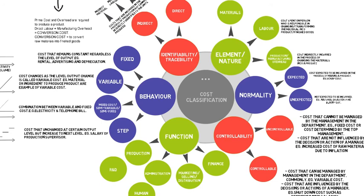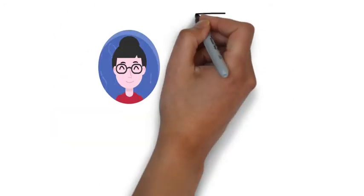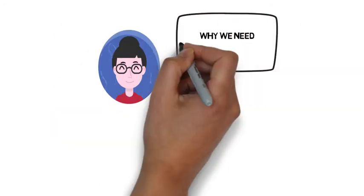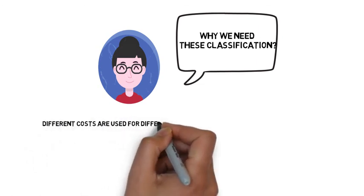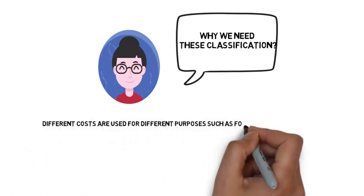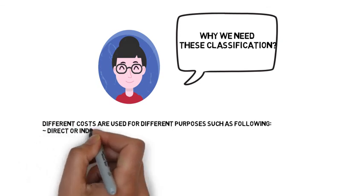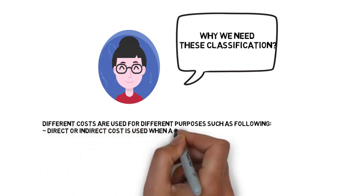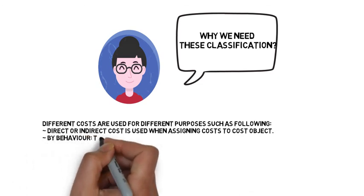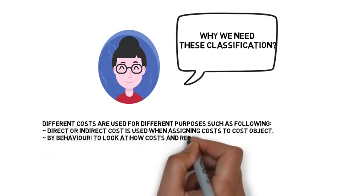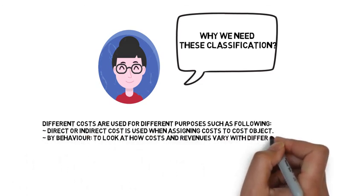As we learned cost classification, one such as Matt Chicanis might ask, why we need these classifications? To explain, different costs are used for different purposes such as following: direct or indirect cost is used when assigning costs to cost object. By behavior, to look at how costs and revenues vary with different levels of activities and essential for decision making.